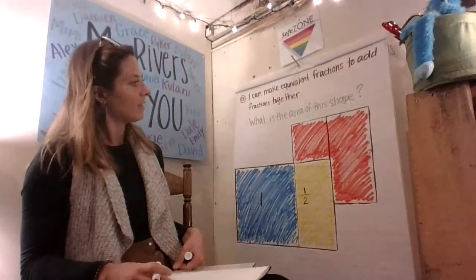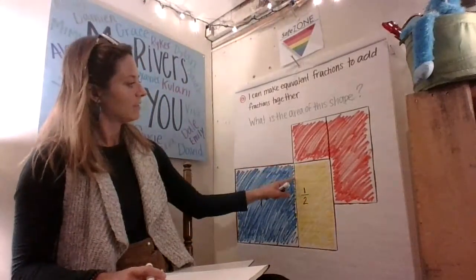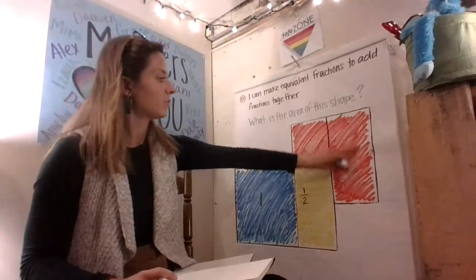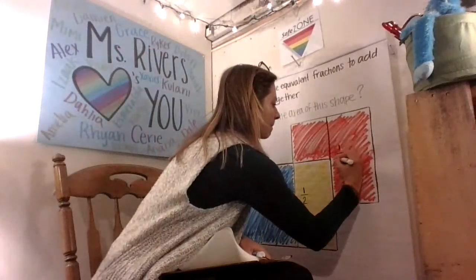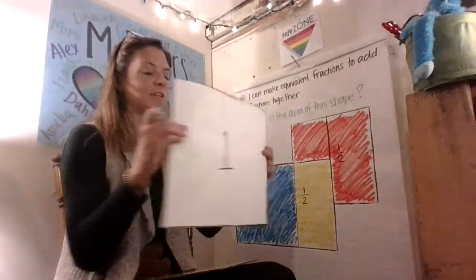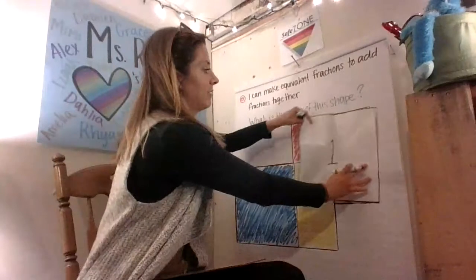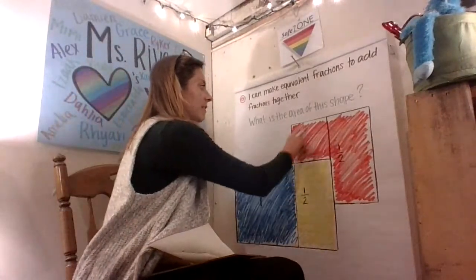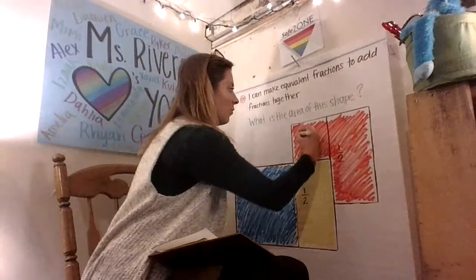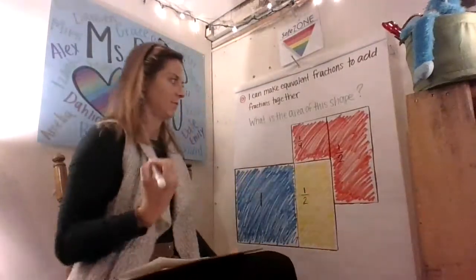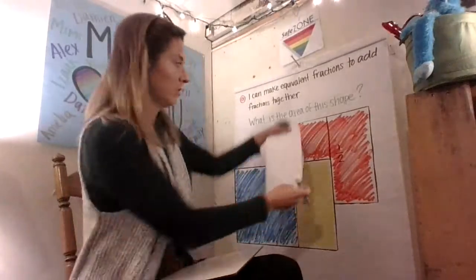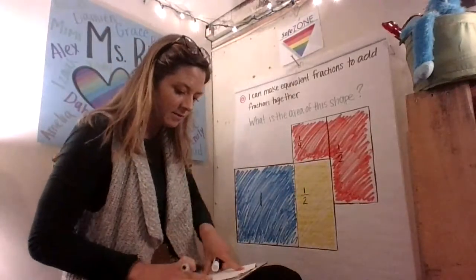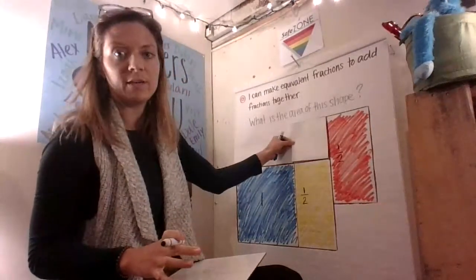Now I can also tell based on that, that this red shape, if it were the whole thing, this would be one half because it's half of this whole shape. Now that all that I have left is this piece, and this piece I can tell is one fourth. Because if I were to break up my whole into fourths, that would be one fourth.